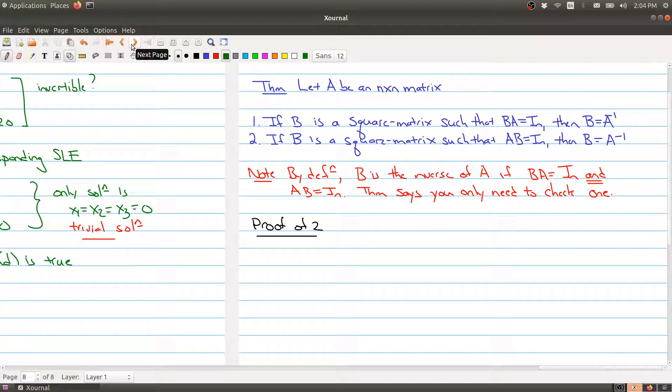Say I have a square matrix as I do here, and suppose that B is a square matrix that B times A equals the identity, then B is equal to the inverse. Or if B happens to have the property that if I multiply on the right hand side I get the identity, then B is equal to the identity.